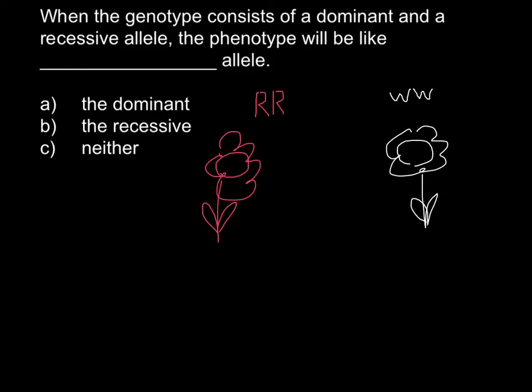Some people also may use small r, but this really doesn't matter as long as you understand what's going on here. So if we cross these two plants, what are we going to get? This is going to be parent 1 and this is going to be parent 2, and their progeny is going to be the F1 generation.